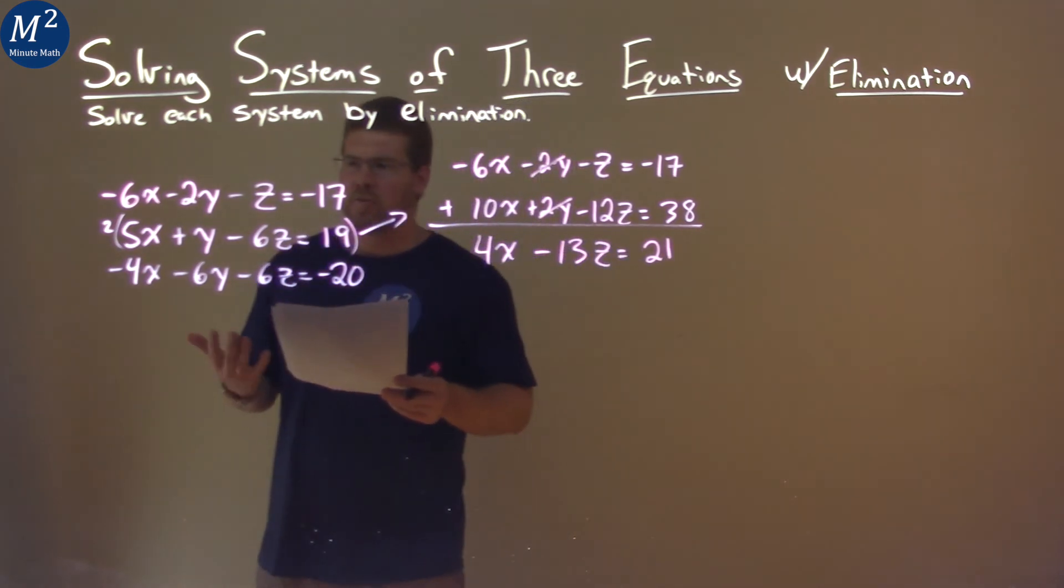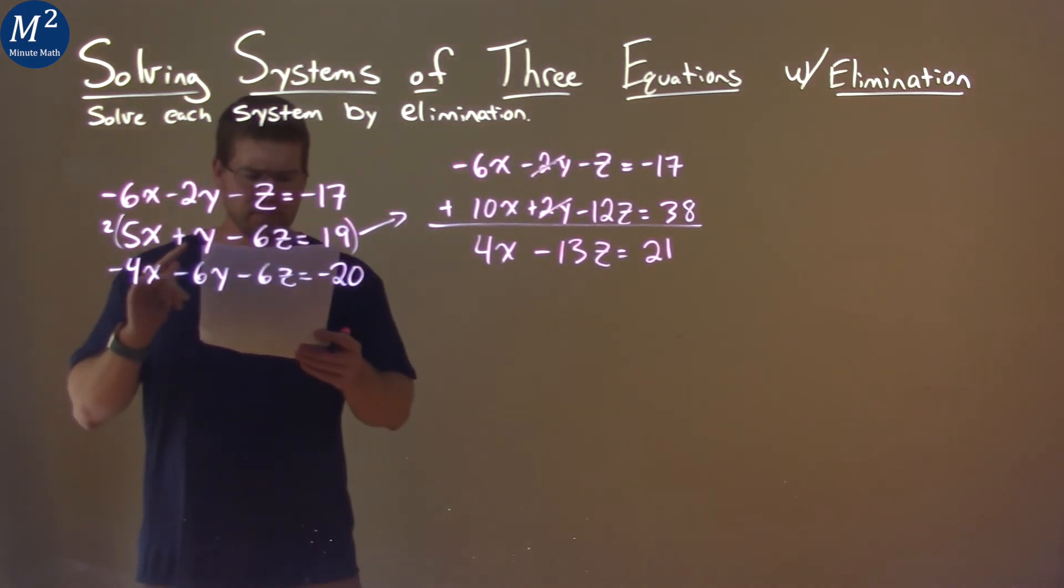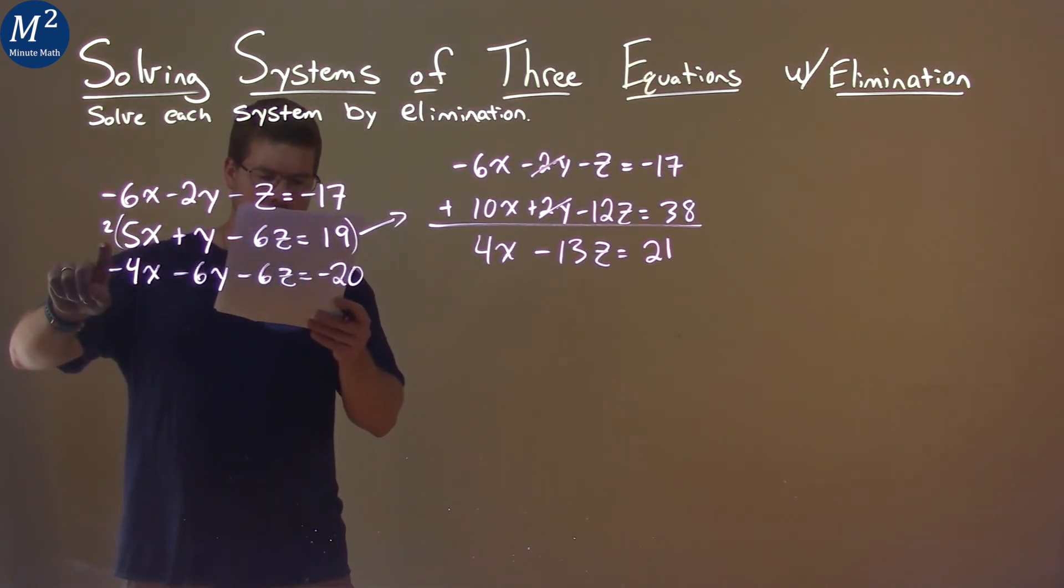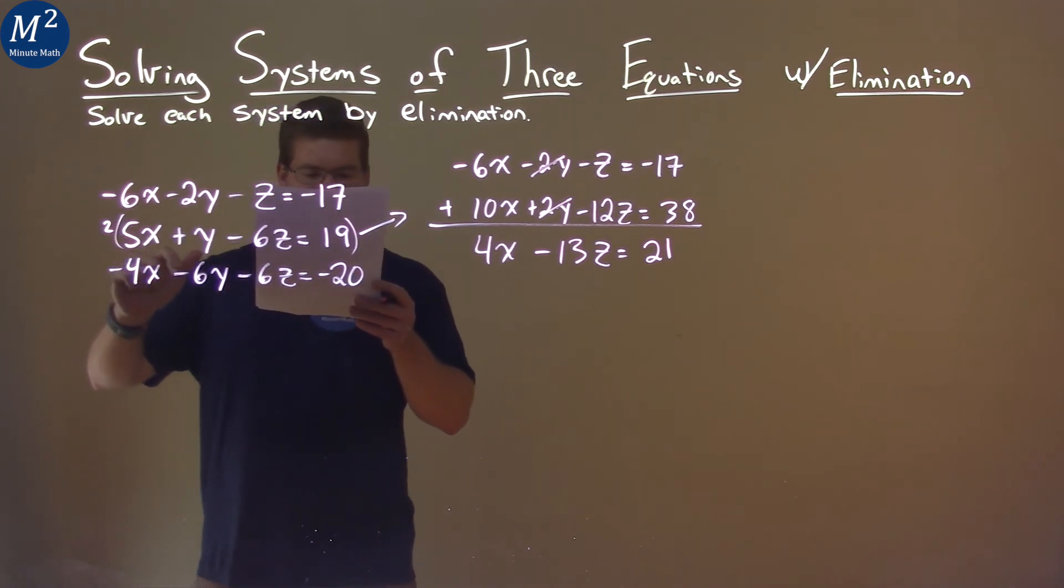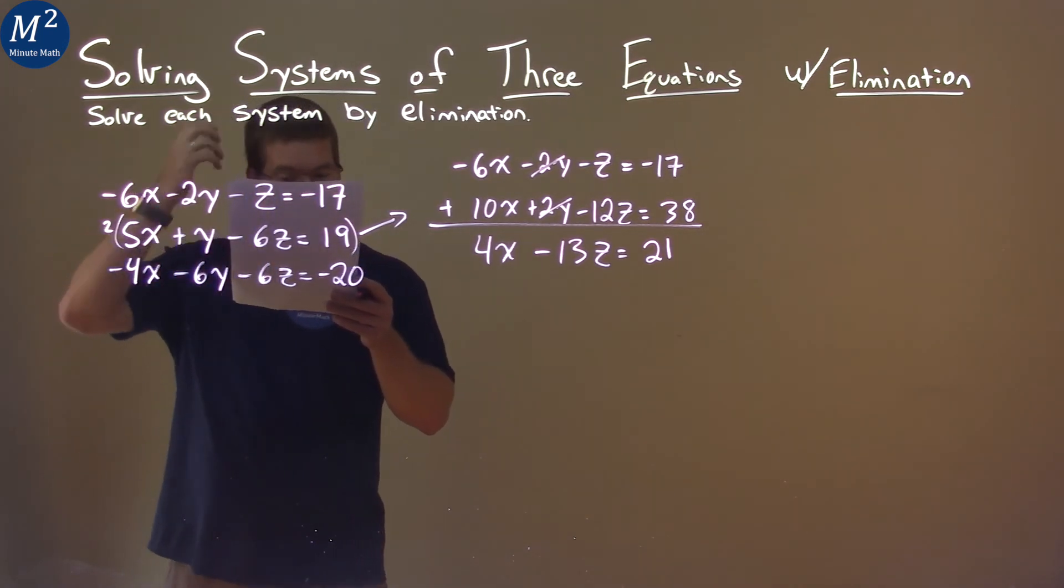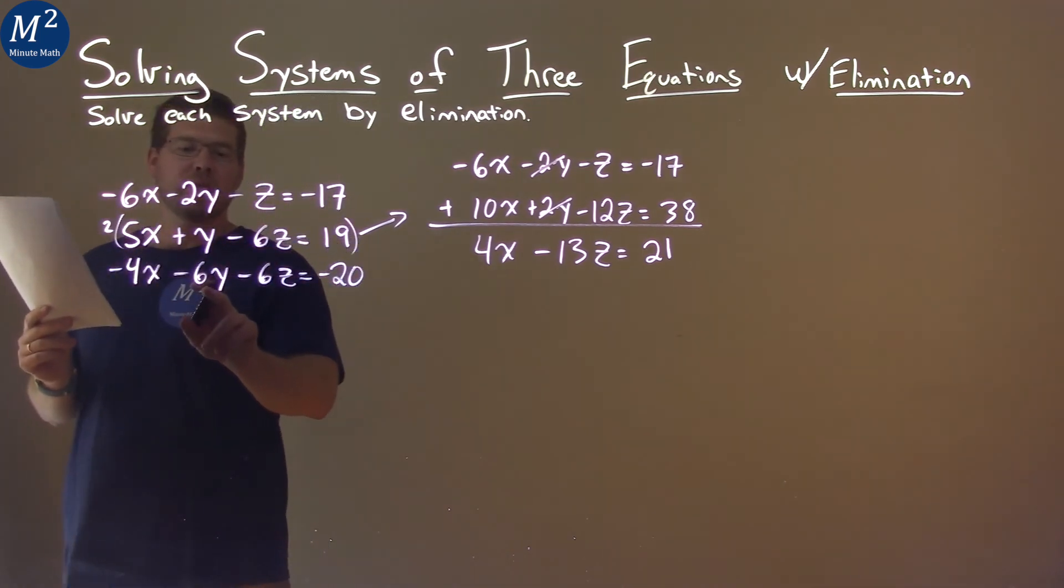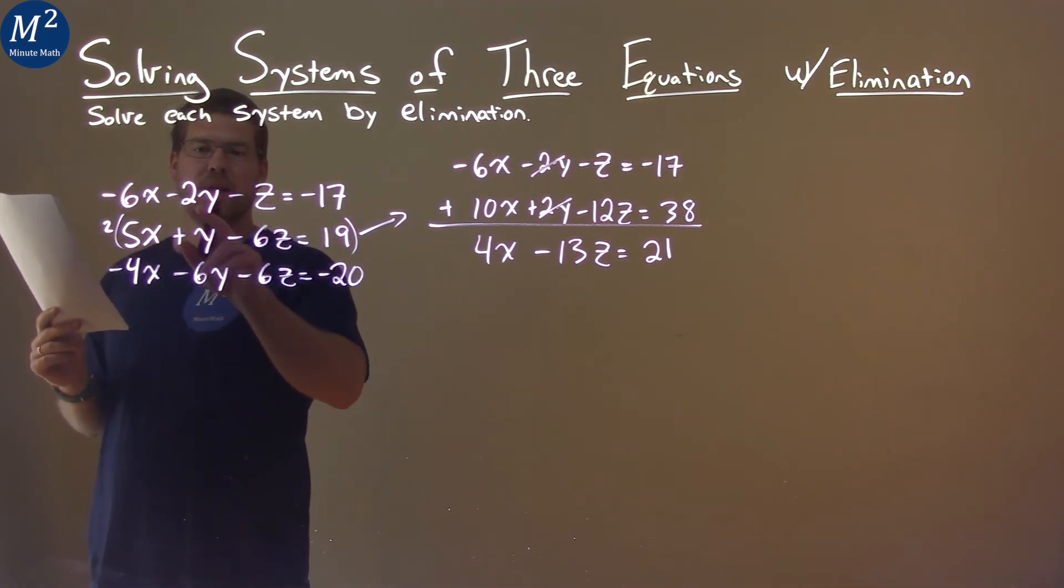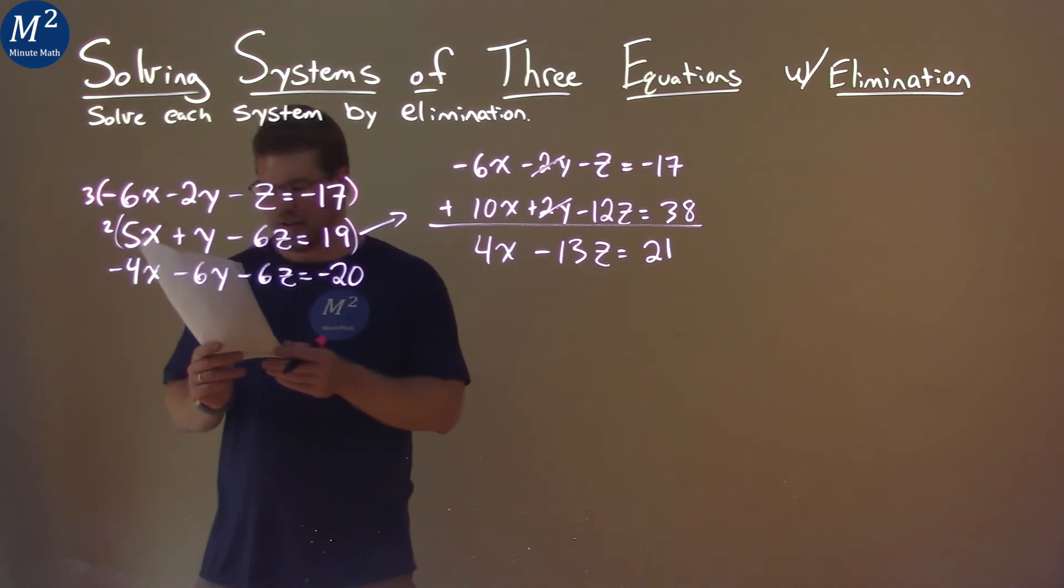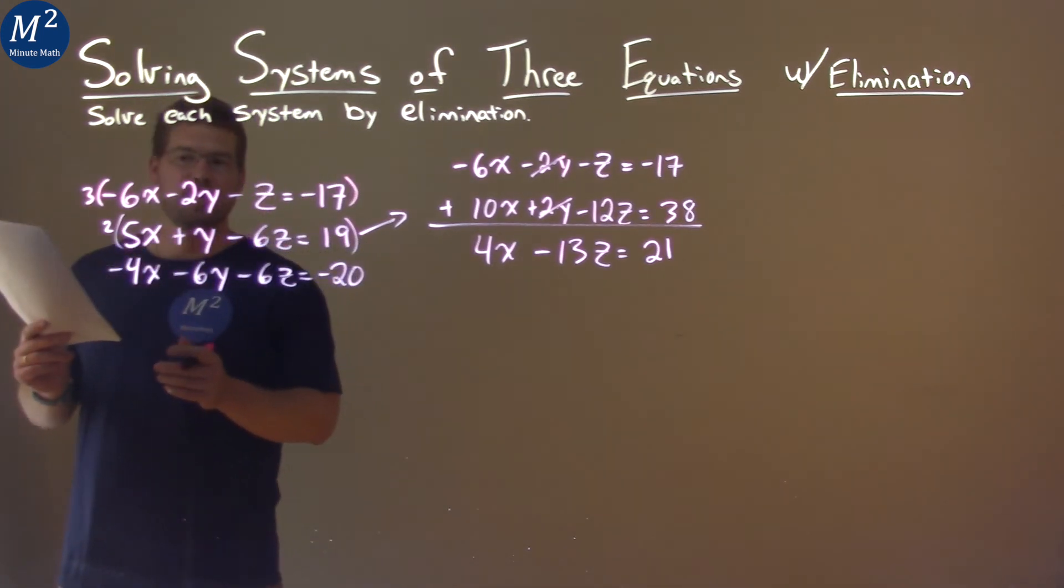Alright, what else can we do? If I want to eliminate the y's here, we have negative 6y here and negative 2y here. If I take this top equation and multiply it by 3, we would have negative 6y up there, and that will help me eliminate that.